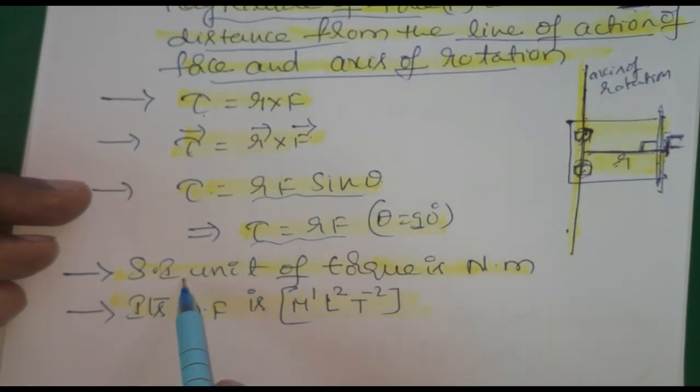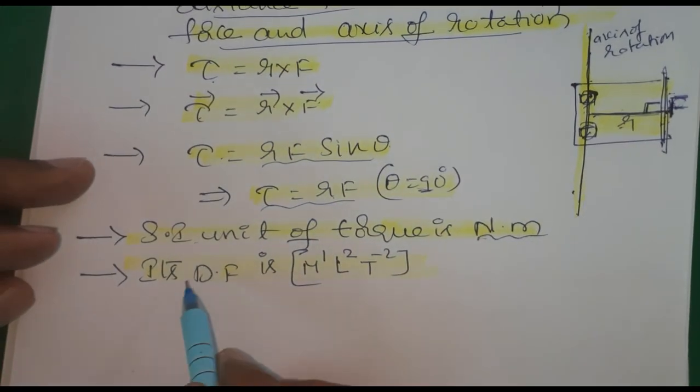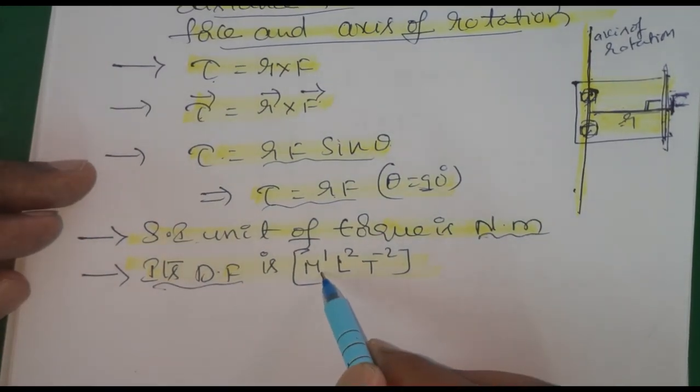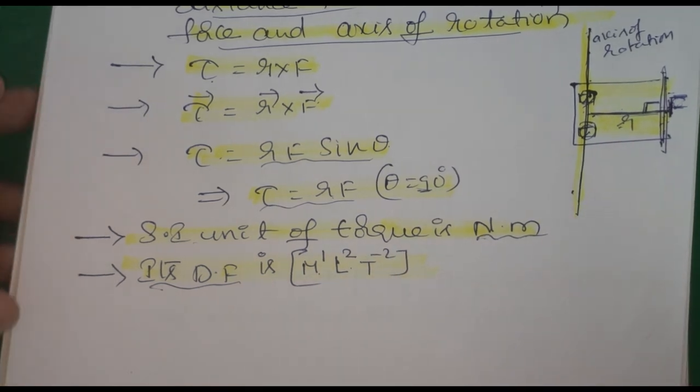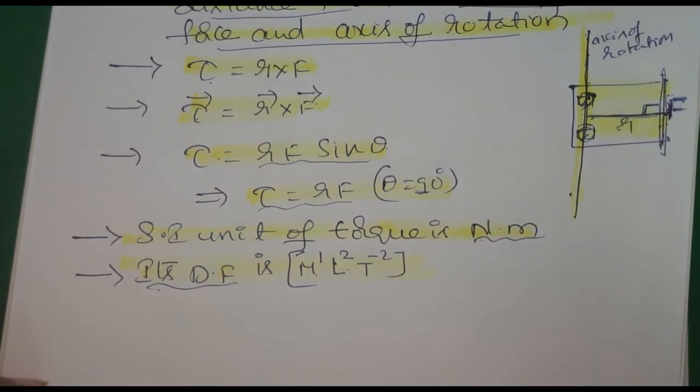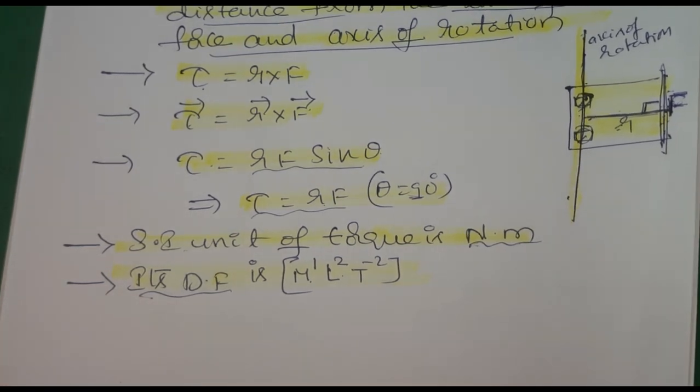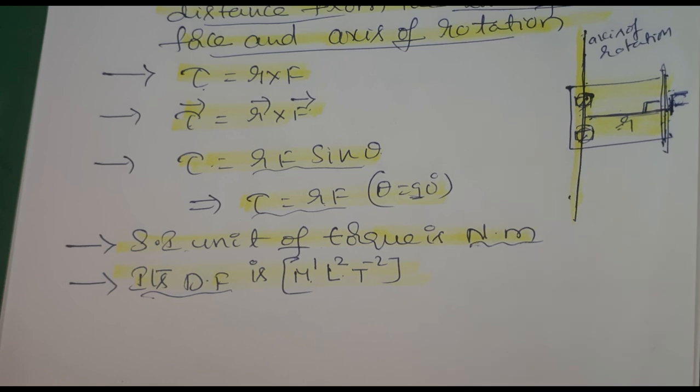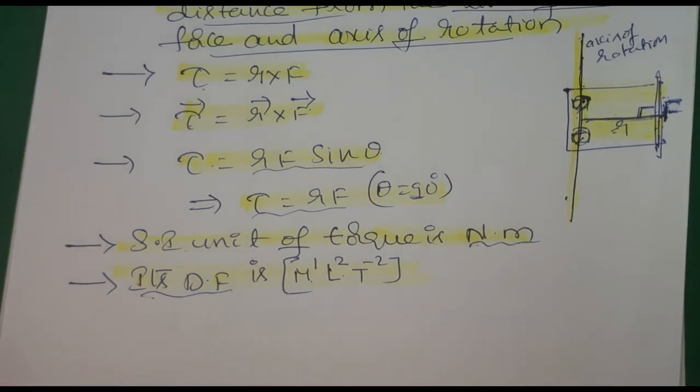So τ equals r F. SI unit of tau or torque is Newton meter. Its dimensional formula is M¹L²T⁻². Simply the definition is: the product of perpendicular distance and force is called tau. Tau is nothing but torque. Torque is also called moment of force which produces turning effect. Important topic, that's all.